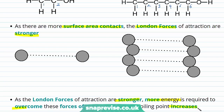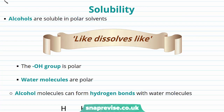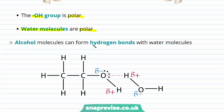Now let's take a look at the solubility of our alcohols. Interestingly, alcohols are soluble in polar solvents, and we can understand this by remembering that like dissolves like. The hydroxyl group, our functional group in our alcohols, is polar, and we know that water molecules are also polar. So our alcohols will dissolve into water. Our alcohol molecules actually form hydrogen bonds with water molecules, as you can see here, and these intermolecular forces of attraction between our alcohol and water molecules are what allows the alcohols to dissolve into the water.